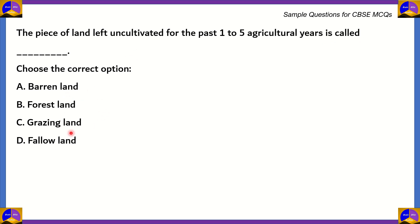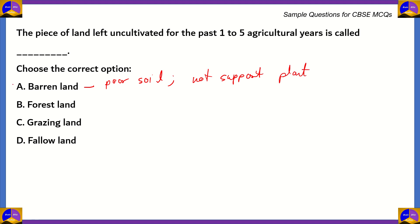Let's look at each of these options and try to eliminate them. Option A says barren land. The term barren land explains itself — it is land which has poor soil, which means that it cannot support the growth of any plants, let alone intensive crops. Therefore, option A is incorrect. It's not left uncultivated for one to five years; it's left uncultivated forever because you cannot support the growth of crops there.